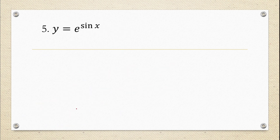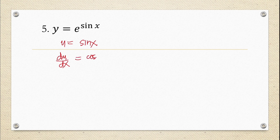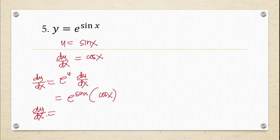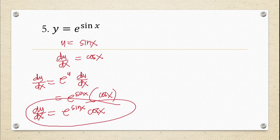For number five, y is equal to e raised to sin x. Our u is equal to sin x, and du/dx is equal to cos x. Applying the formula dy/dx = e raised to u times du/dx, therefore dy/dx equals e raised to sin x times cos x. This is the answer for number five.